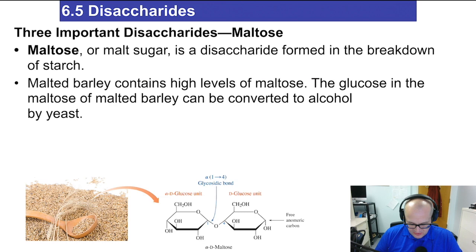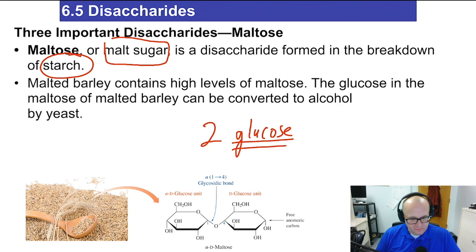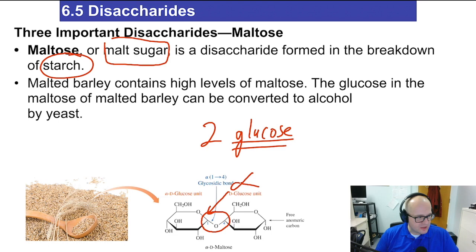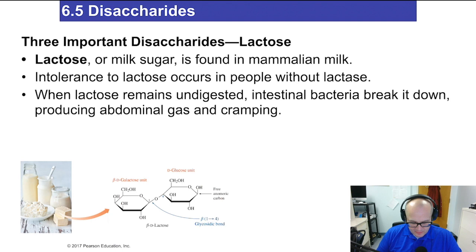Here's one of the disaccharides you need to be able to identify by sight: this is maltose, or malt sugar. It's a disaccharide formed from the breakdown of starches. Maltose is two glucose molecules put together with an alpha glycosidic bond. Malt sugar is generally used in the brewing and liquor industry, broken down to make alcohol by yeast — that's where the alcohol in beer and some spirits comes from.